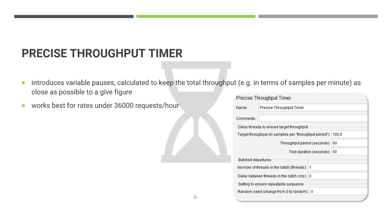This is how it looks when you add a Precise Throughput Timer — you have to mention the target throughput details and there are options to configure the batched departures and the random seed. By default, the random seed is zero, which means it's totally random.